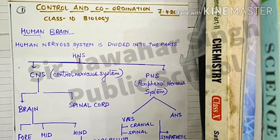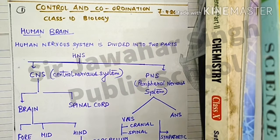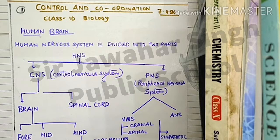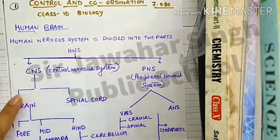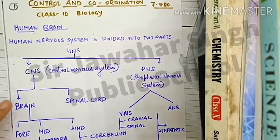The brain is under the human nervous system. Before we go into the brain, we will go through a quick flowchart to explain about the brain and under which systems it falls. Now let's start with the human brain.